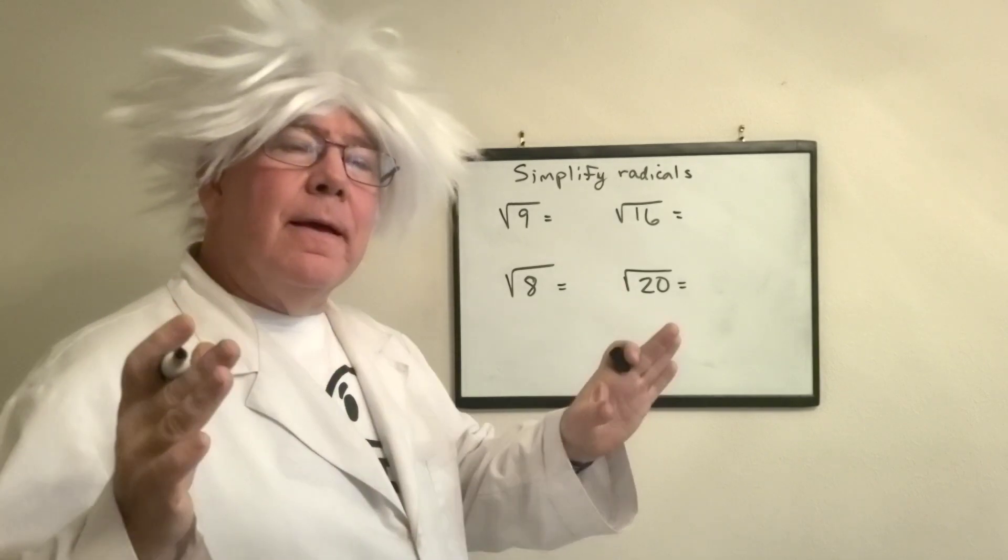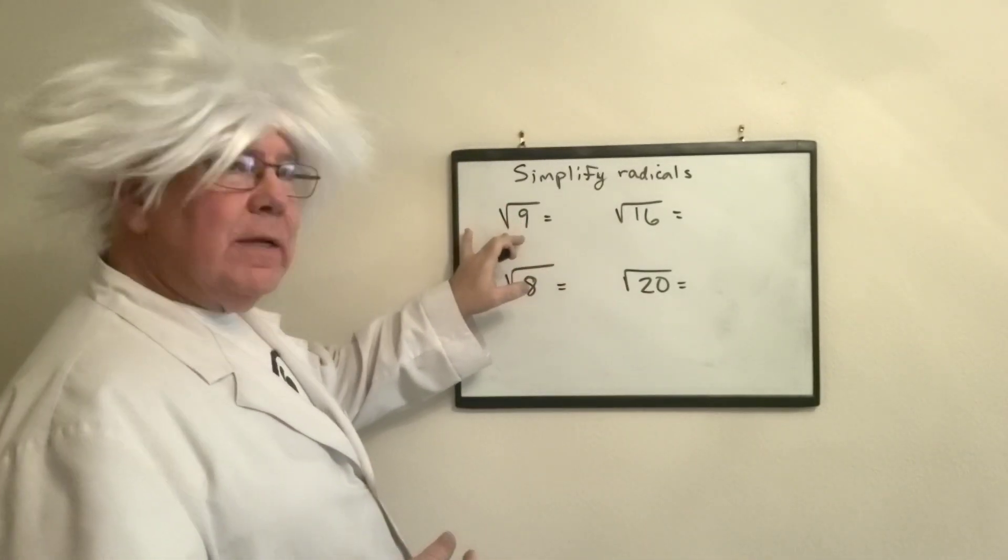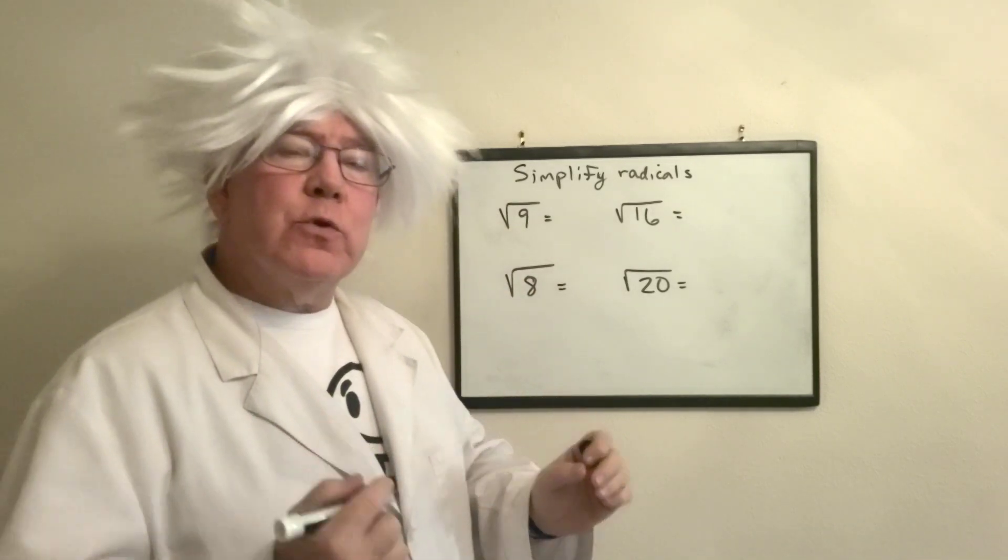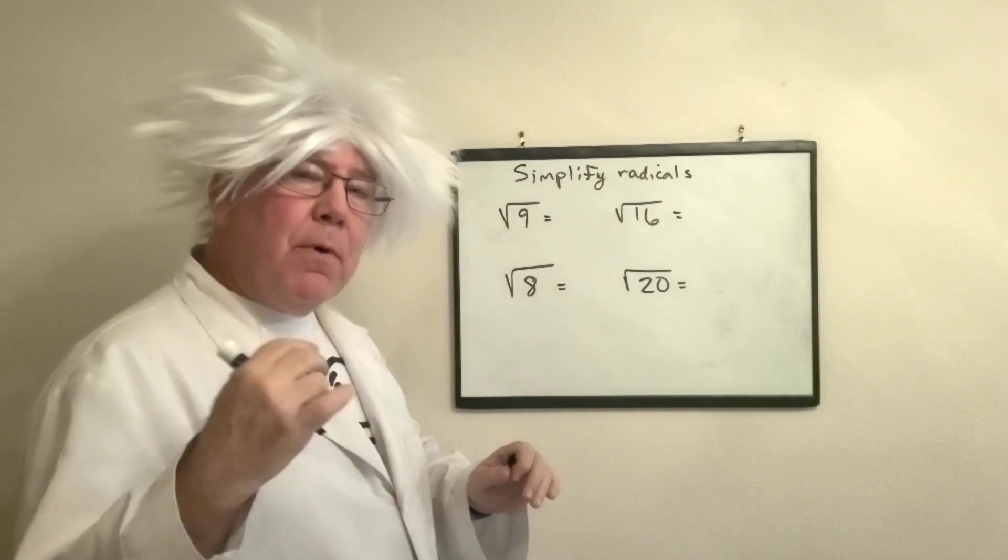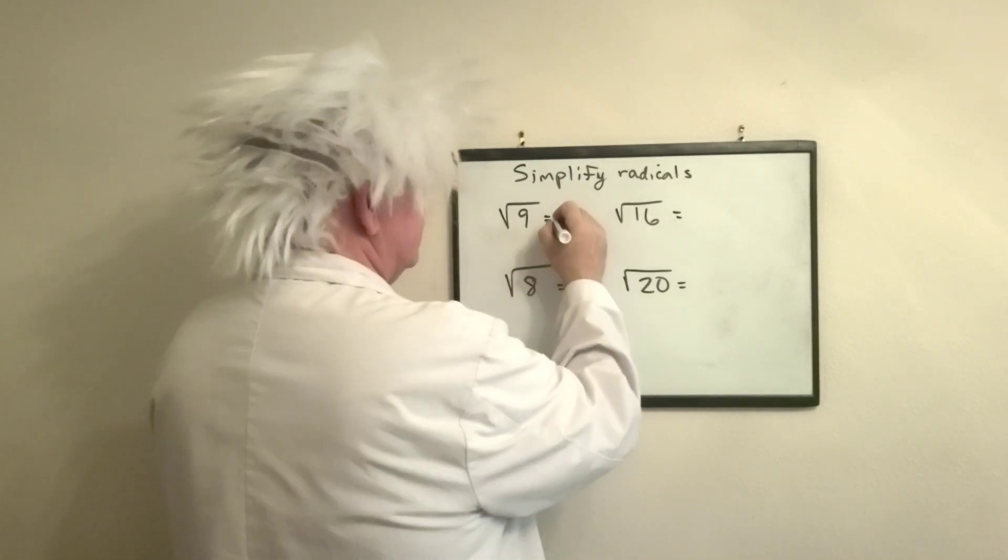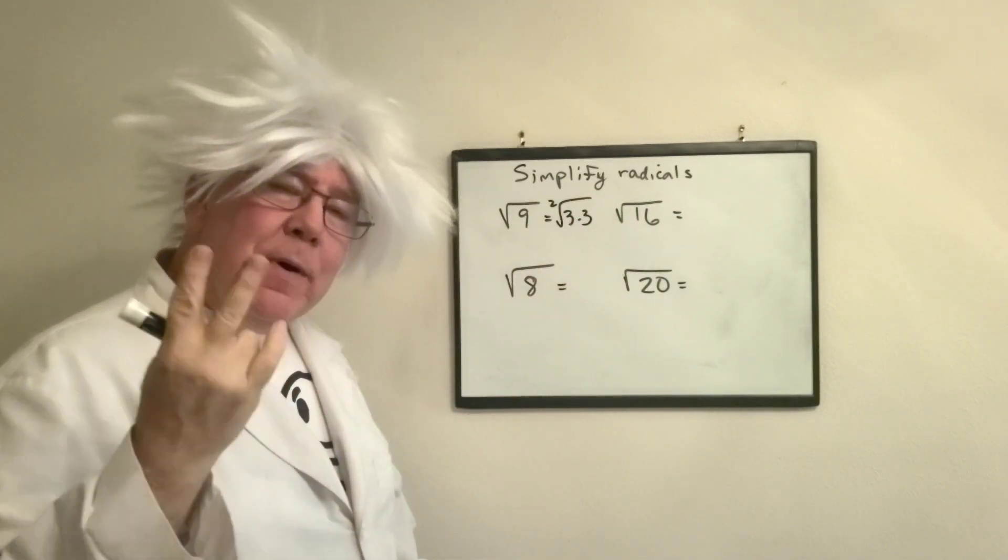Now for those of you that haven't worked any of these, we're going to take what we call the square root. That means it's an index of two. That means I have to find a number that multiplies to give me nine. Hopefully you know that this is three times three. The index means you have to have two to come out.